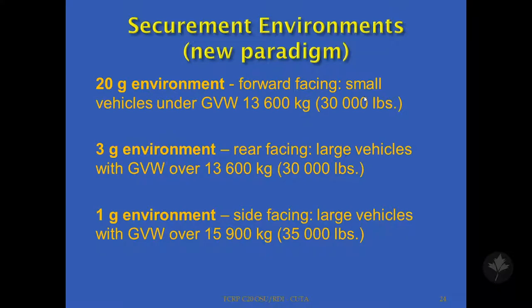Thank you. Good morning. Now we're moving from looking at the mobility aid and the user to our focus really around the vehicles. One of the things we discussed in our project was looking at the securement environment in terms of the size of vehicle, the mass of the vehicle, and the requirements for managing the forces. You see a 20G environment — that is the type of forces that a securement system must control, generally forward-facing. We're looking at small vehicles, paratransit vehicles, under the gross vehicle weight of around 14,000 kilograms.